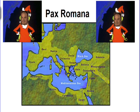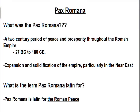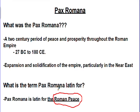Today we're talking about the Pax Romana. This is that period in Roman history where they've already established a huge empire — it spans the whole Mediterranean — and we have a period of peace and prosperity for Rome. The Pax Romana is actually Latin, and that phrase means Roman peace. It's a two-century period of peace and prosperity throughout the Roman Empire, approximately 27 BCE to 180 CE.